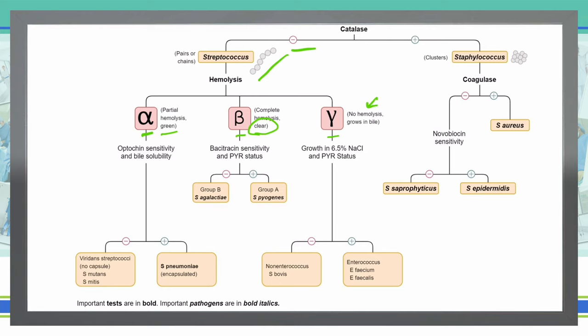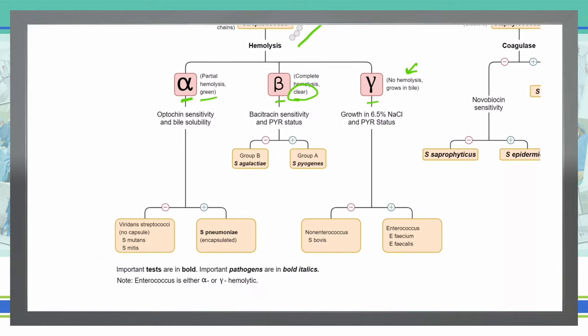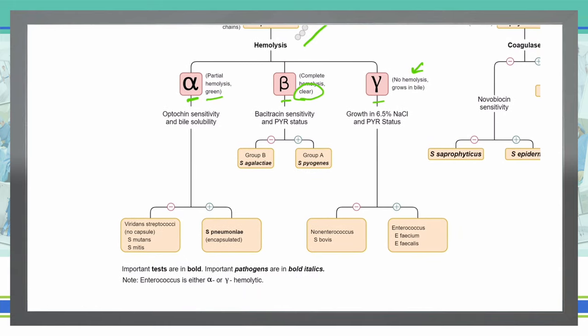So we can now move forward and determine our Streptococcus based upon this hemolysis. If we have partial hemolysis because the blood agar plate has turned green in the presence of that bacteria, it is going to be either Strep mutans, Strep mitis, or Strep pneumoniae. We need to determine which one of these we're dealing with, so in that case we will check its sensitivity to optochin as well as bile solubility. If it is sensitive to optochin, then it is Strep pneumoniae. If it is not sensitive to optochin, then we're talking about Strep mutans and Strep mitis.